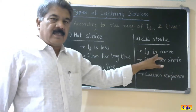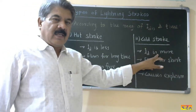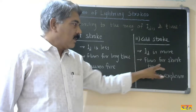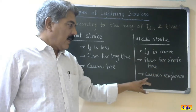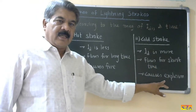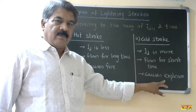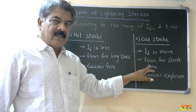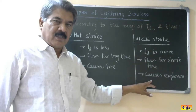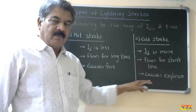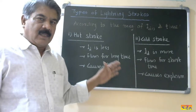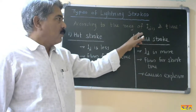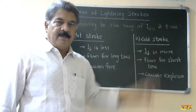In the second classification, the discharge current magnitude is very high but it flows for a relatively short time, and it causes an explosion at the object when it strikes. So: more current, less time, and causes explosion. That is how lightning discharges are classified as per the magnitude and duration of the discharge current.